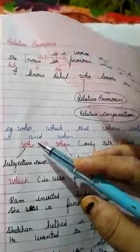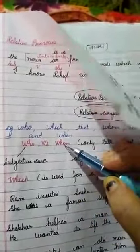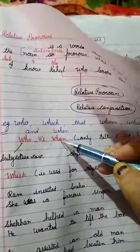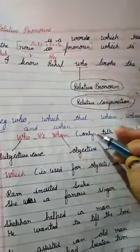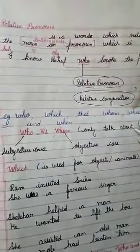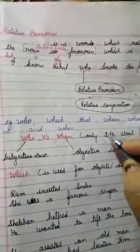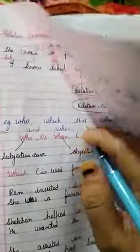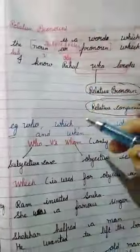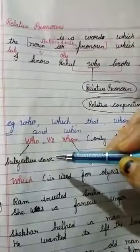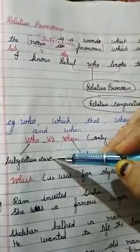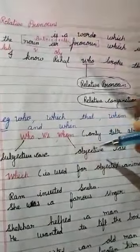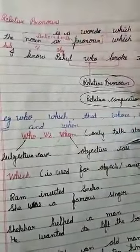Now, there is confusion about 'who' versus 'whom.' Both are used only to talk about persons. But the major difference is that 'who' is used in the subjective case, while 'whom' is used in the objective case. Now we will learn the use of relative pronouns — they have different words with different uses. For example, 'who' talks about people.